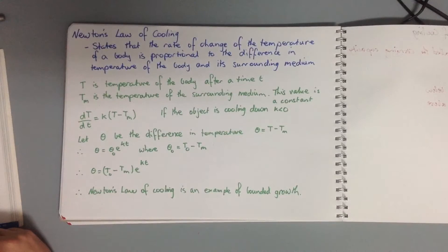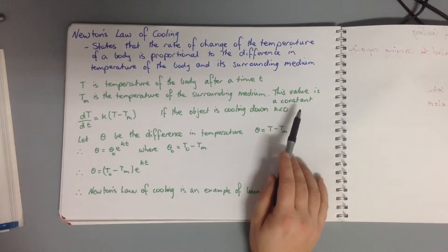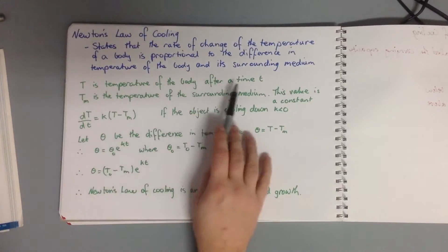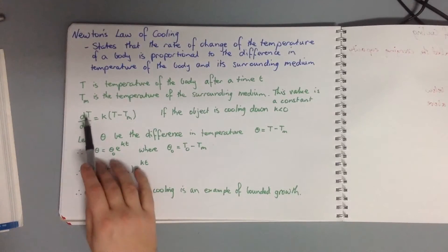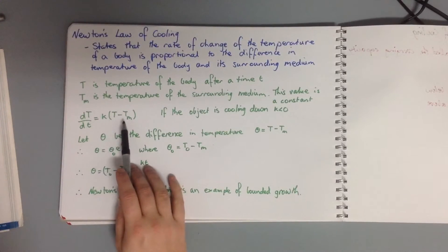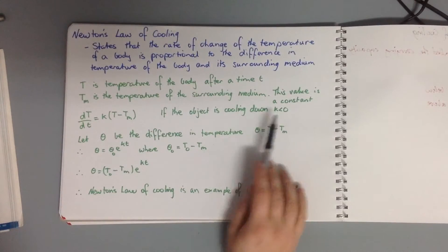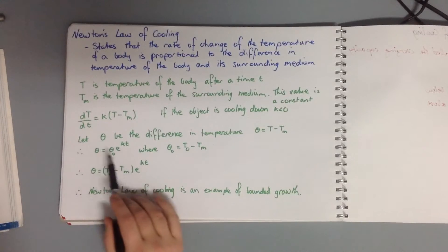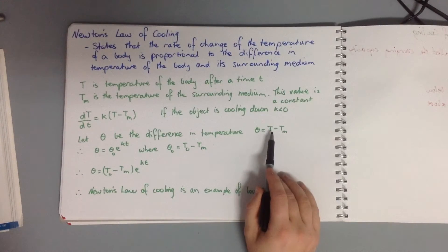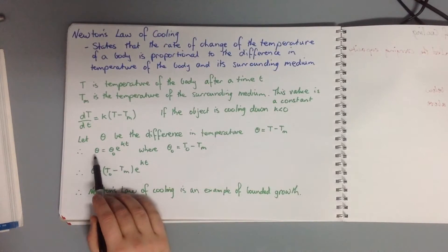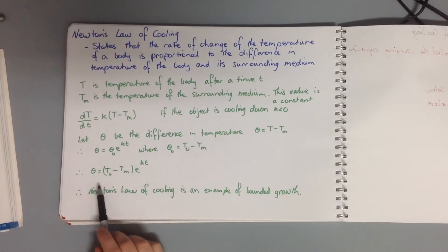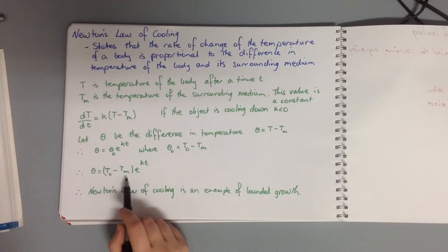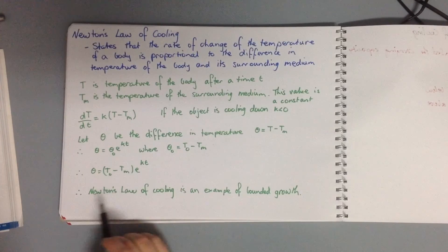Tₘ is the temperature of the surrounding medium, and we take this value to be constant — so although energy leaves the body, we assume it doesn't heat up the surrounding medium. Then dT/dt equals K times (T minus Tₘ). If the object is cooling down, K is less than zero. We let theta be the difference in temperature, so theta equals T minus Tₘ. This gives theta equals theta₀ times e to the KT, where theta₀ equals T₀ minus Tₘ.